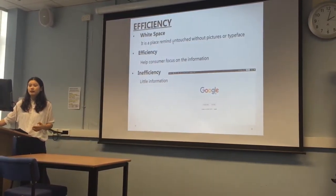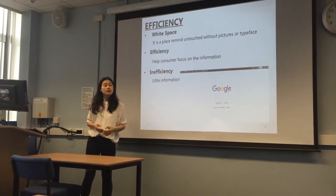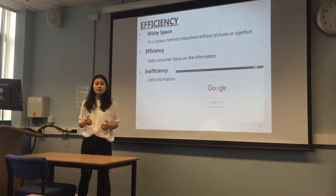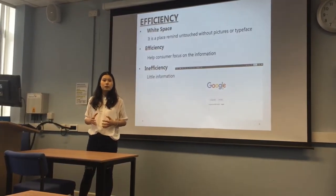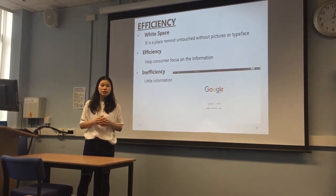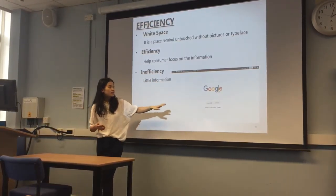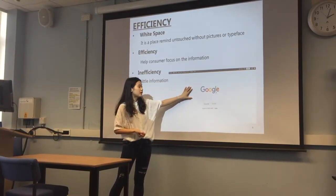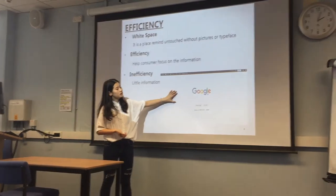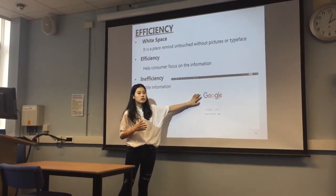Let's move on to the next perspective, which is about another feature of minimalistic advertisement — we call it white space. In common knowledge, white space is simply white color. But in this context, white space is a place left untouched — without pictures, without words, without typeface. A very good example is the Google website, which we use every day. It uses a non-graphic zone to contrast with the graphic zone, forcing people to focus on the graphic zone.